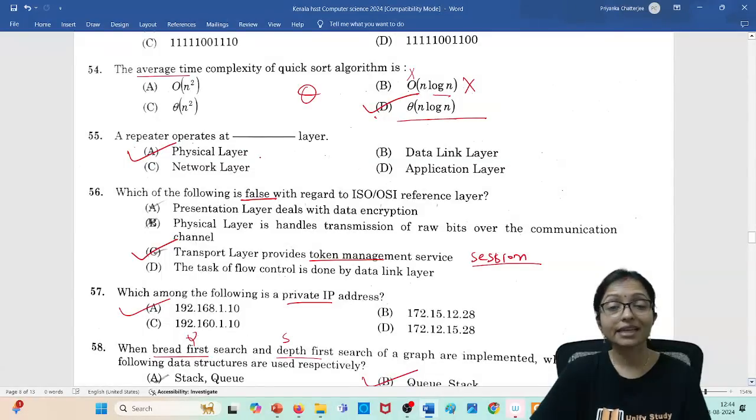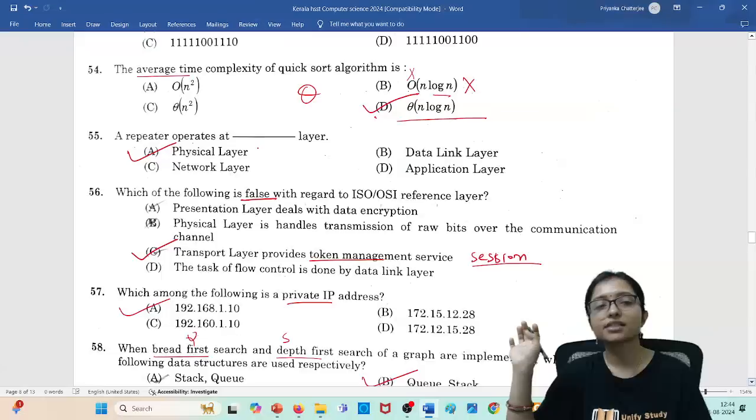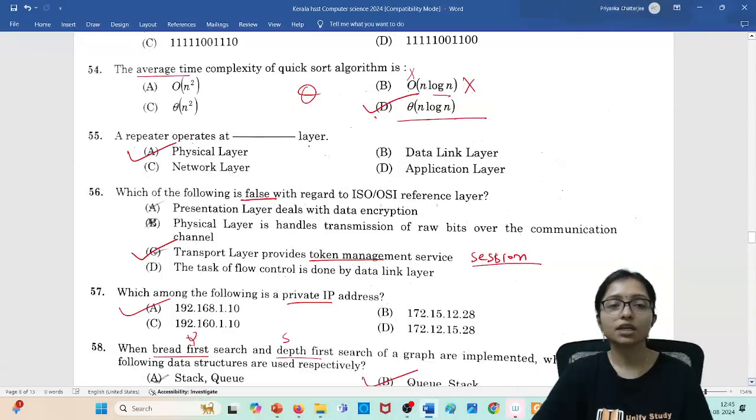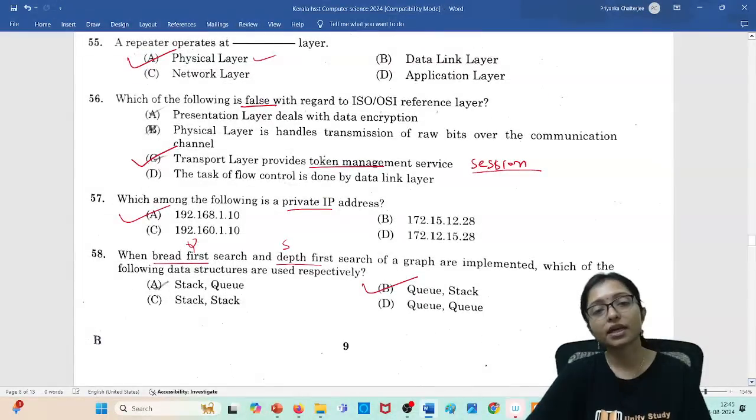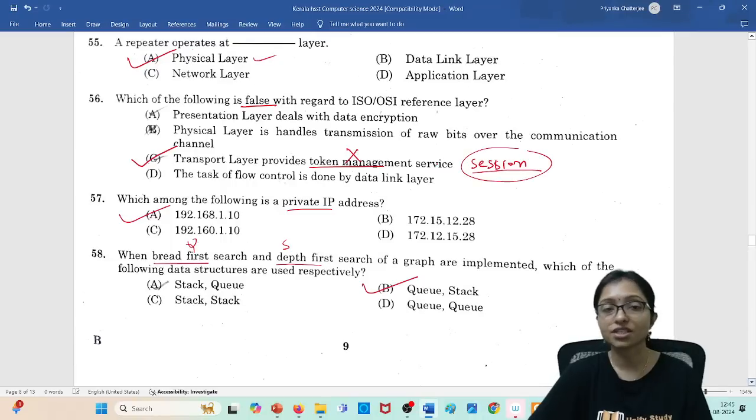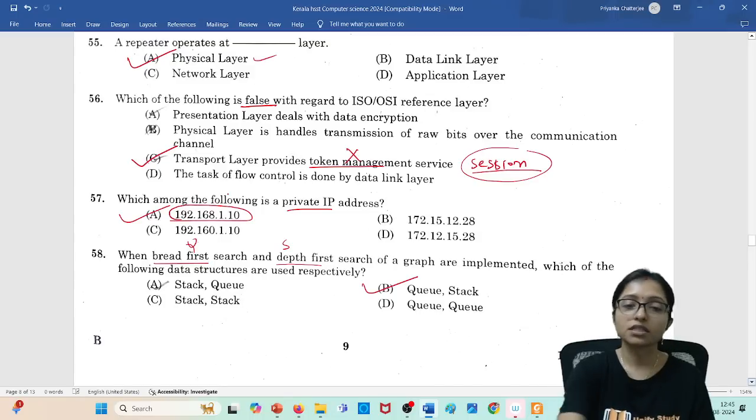The repeater operates in which layer? Always layer questions, now everyone is asking in which layer which one is working: physical layer. Which one is false about the session layer? Transport layer token management, it is wrong because token management is working on the session layer.